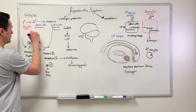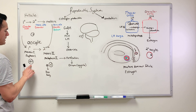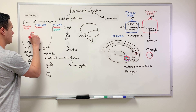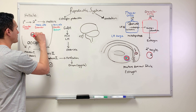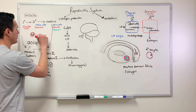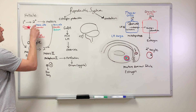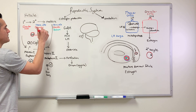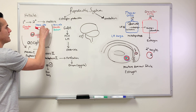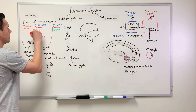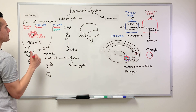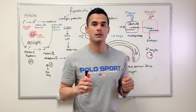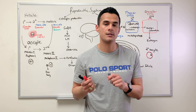The primary follicle has a diploid (2n) primary oocyte with a single simple layer of granular cells. As development continues, the granular cell layers increase — for instance, the secondary follicle contains theca cells and multiple layers of granular cells. This is a good stopping point, and in the next lecture we'll discuss the ovarian cycle.